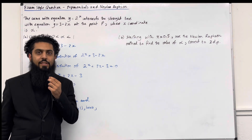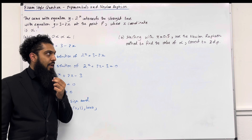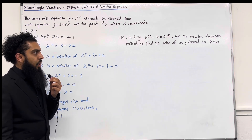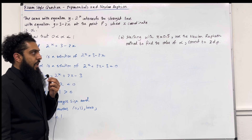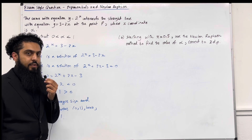This completes part A of the exam-style question. Let's have a look at part B: starting with x equals 0.5, use the Newton-Raphson method to find the value of alpha correct to three decimal places.